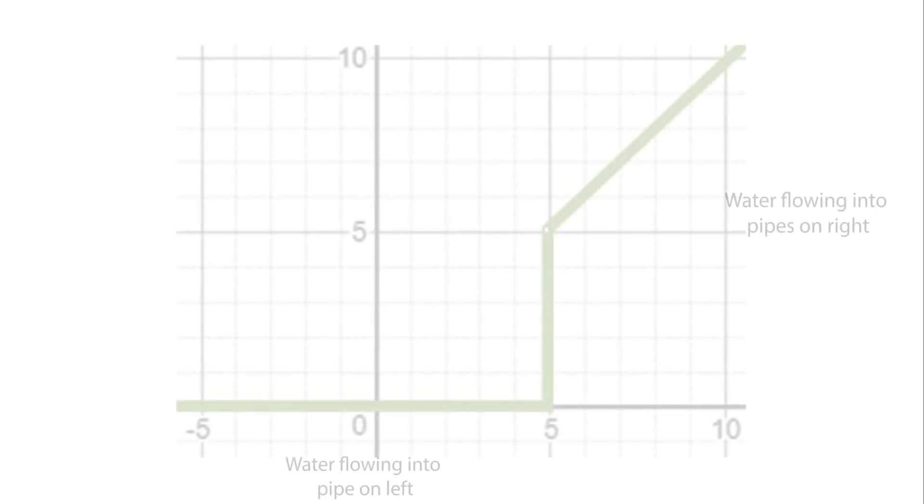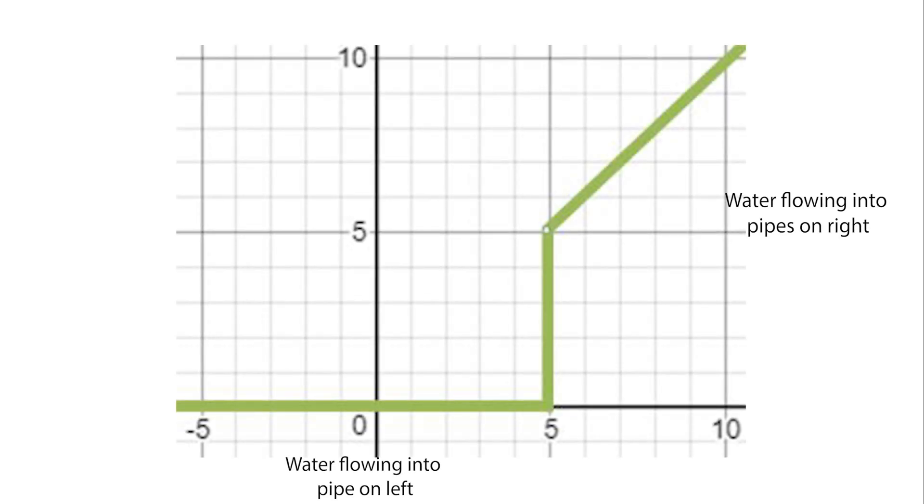If we had to draw a graph to describe this mechanism, it would look something like this, where up until there are 5 litres of water coming in from the left pipe, there will be no water being distributed into the pipes on the right. At the point that 5 litres of water are being pumped through the left pipe, and after any more than 5 litres of water are being pumped through the left pipe, the mechanism allows the same amount of water being pumped from the left pipe into the pipes on the right.